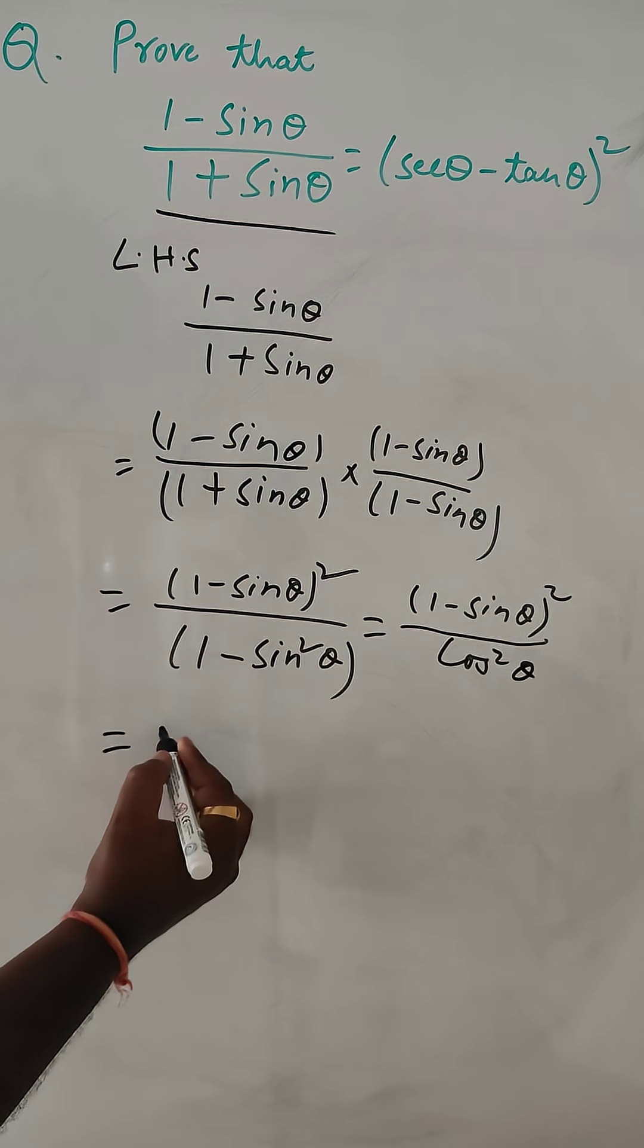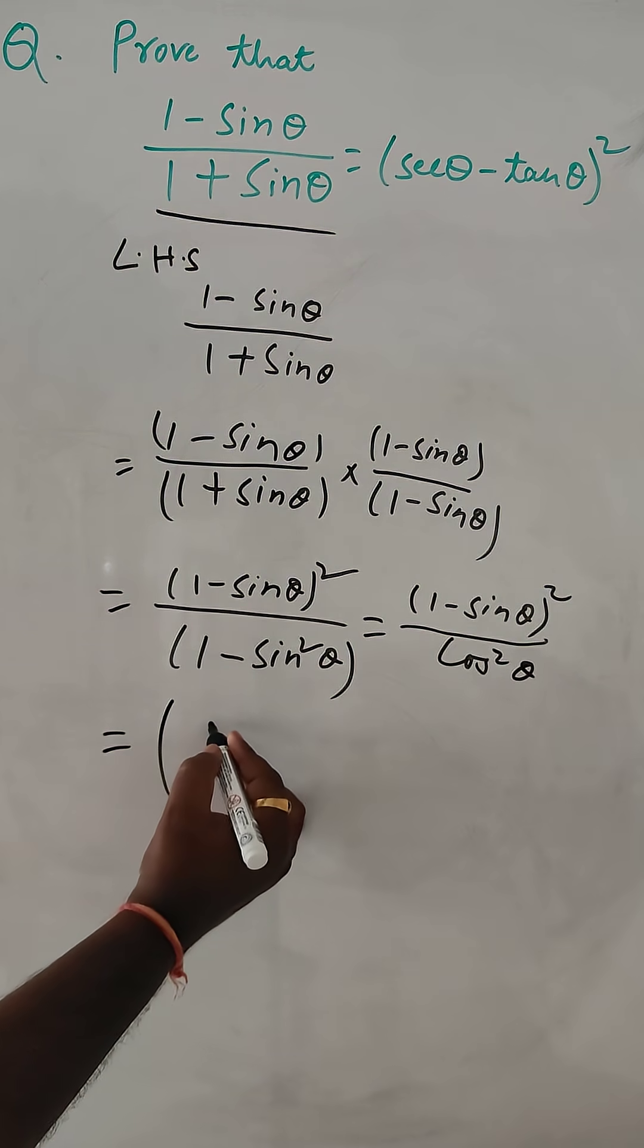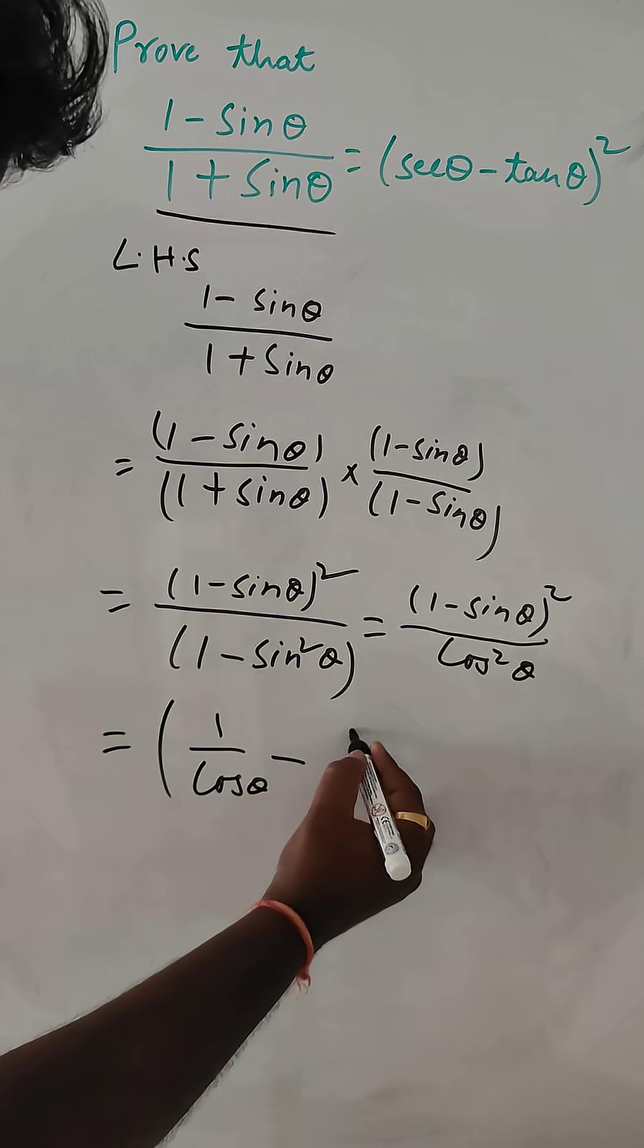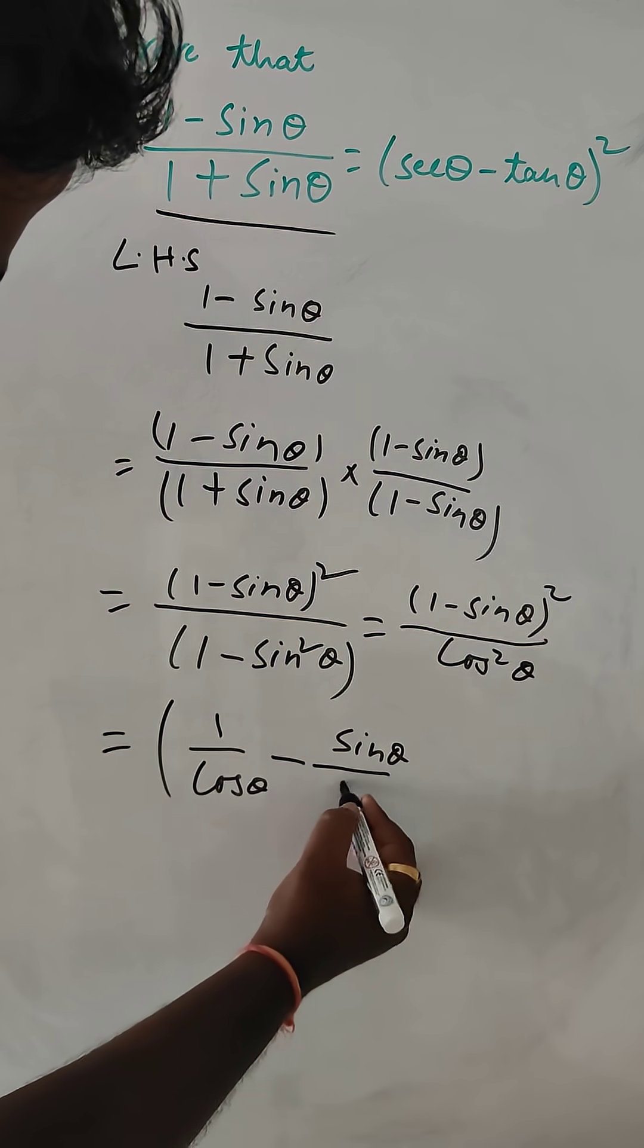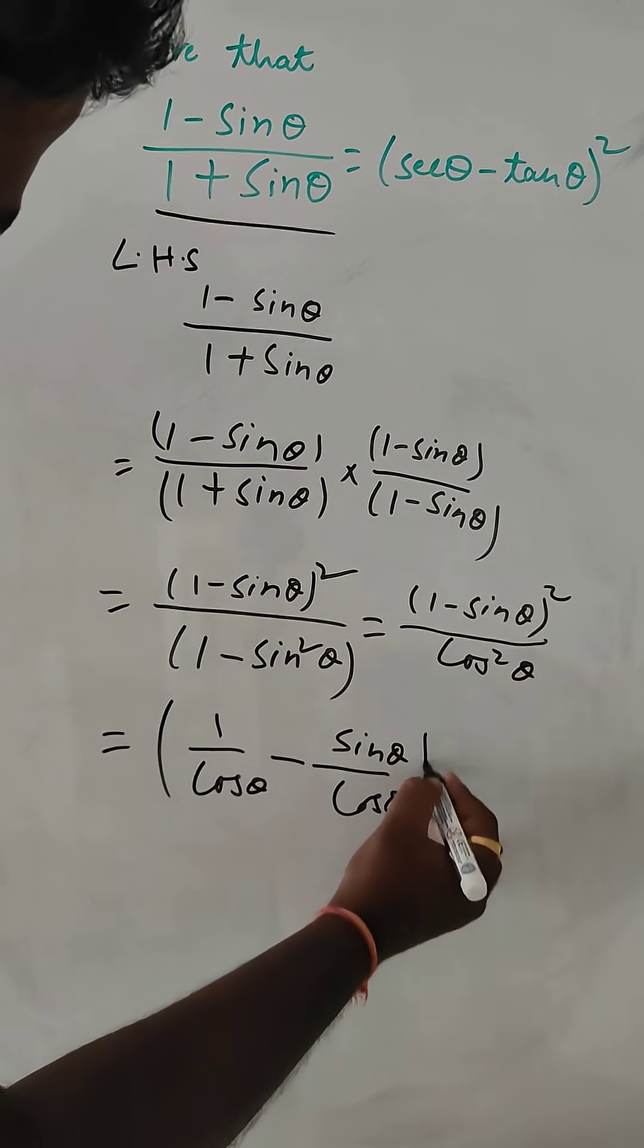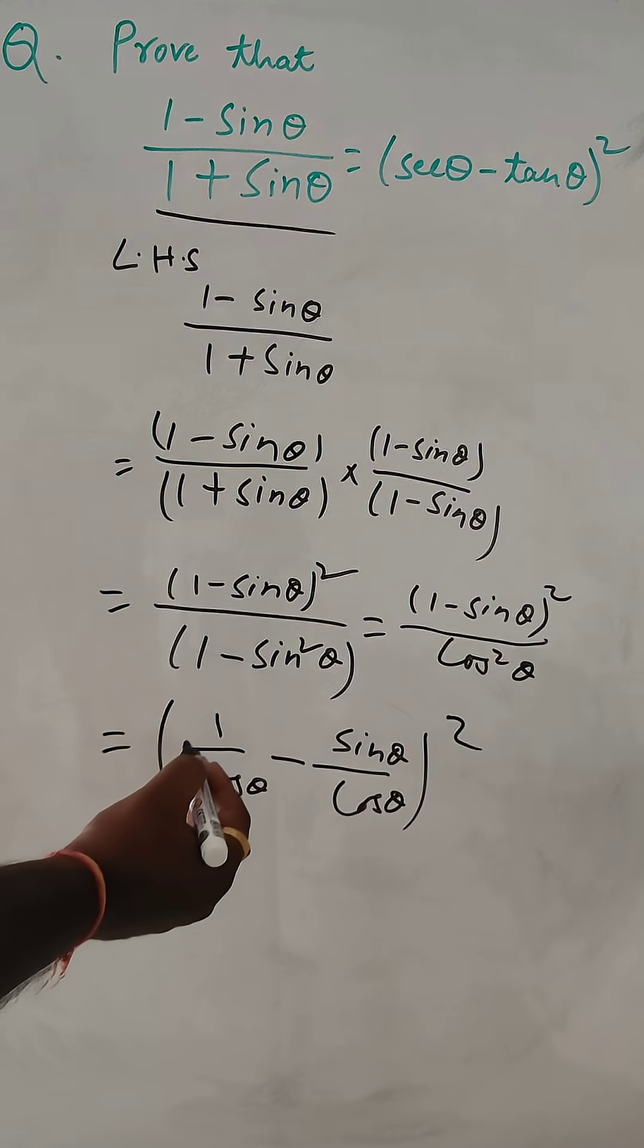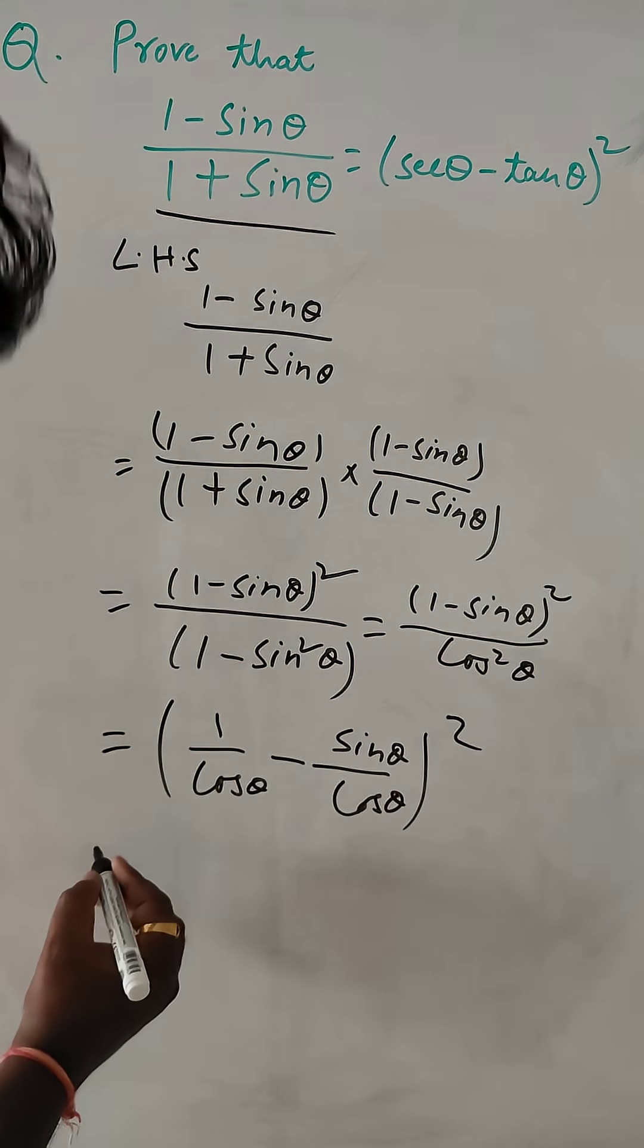Now this can be written like 1 by cos theta minus sin theta by cos theta whole square, correct. So, now this will be the sec and this will be the tan.